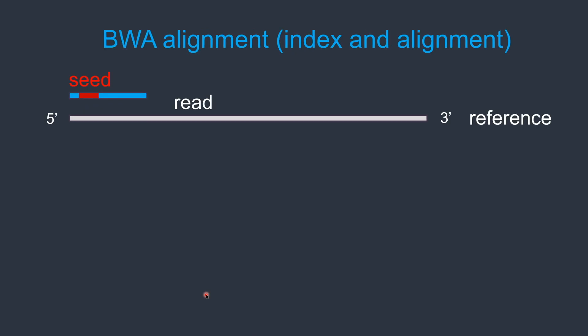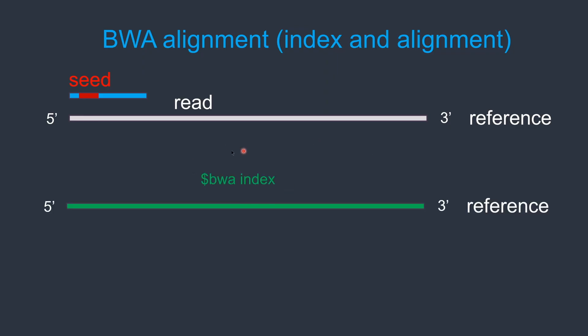Here I will show a high-level example of how BWA aligns reads to a reference genome. It has two steps: first, it generates the index of the reference genome, and then it performs the alignment. Let's take an example — we want to align this read to this reference genome. The first step creates the index of the reference genome. Indexing creates data structures such as FM index and BWT of the reference genome.